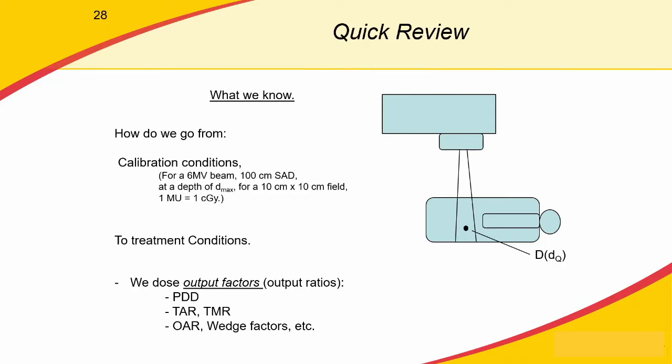We know the dose for one field size at one depth for each beam energy of the treatment machine. What we're discussing in this series is how we go from our calibration conditions — a specific field size and depth — to the conditions of the patient's treatment, where we'll be at a different depth using a different field size. We're discussing the output ratios used to calculate dose at the depth and field size needed for treatment, including percentage depth dose, tissue air ratio, tissue maximum ratio, and any other factor affecting beam output.